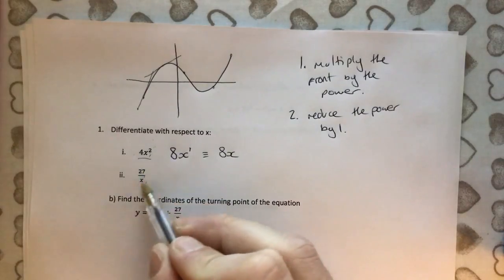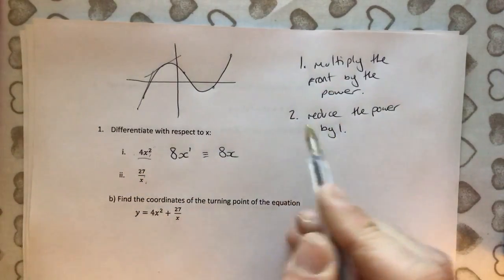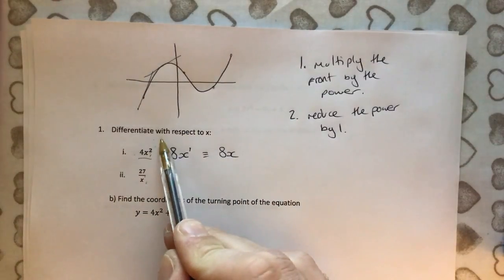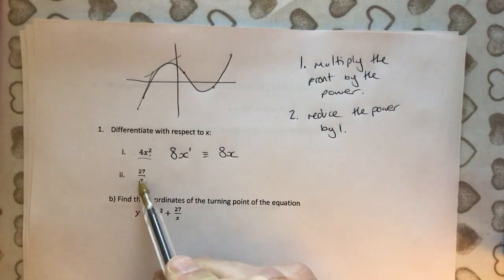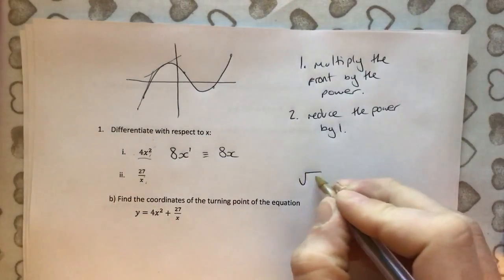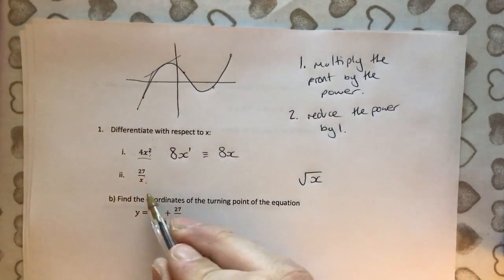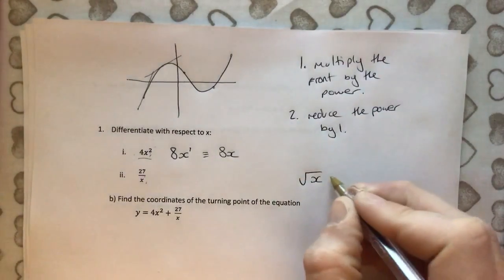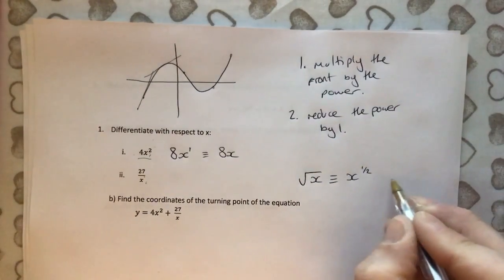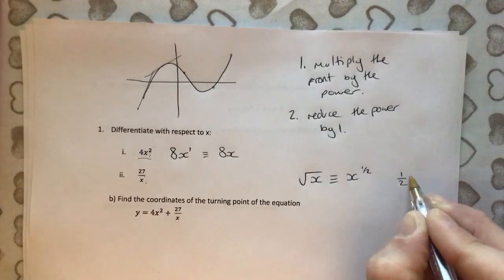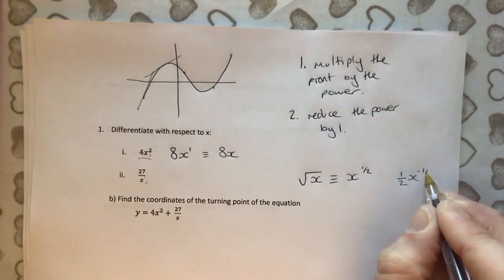What about this thing? Well, the problem with this is that this nice little trick only works for x to the power of's. And this is not written in that form because x is on the denominator. We can't do that. Likewise, we couldn't do square root of x. We have to rewrite these as x to the power of. So we could write this one as x to the half. And then we could do it. We could times the front by the power. A half x. And then reduce the power by 1 would be minus a half.